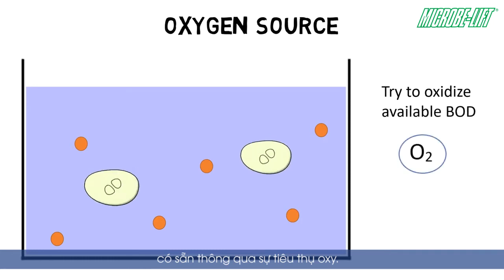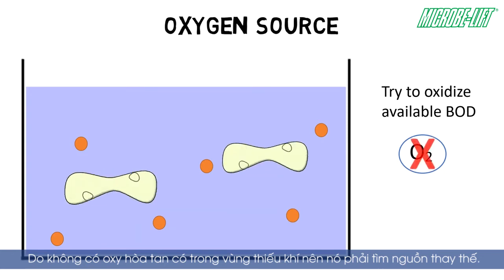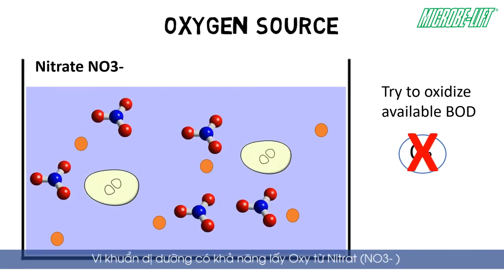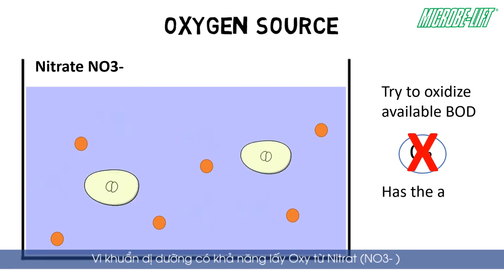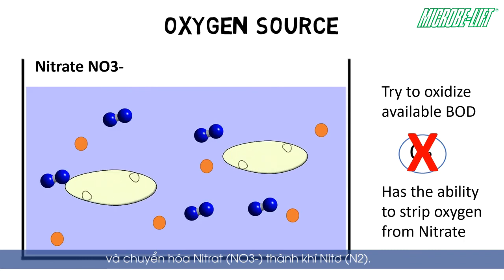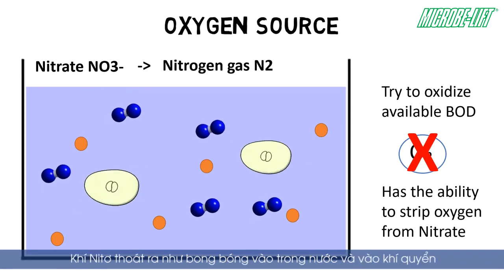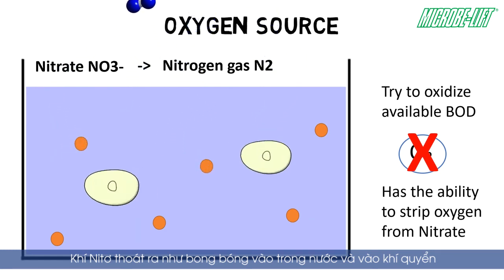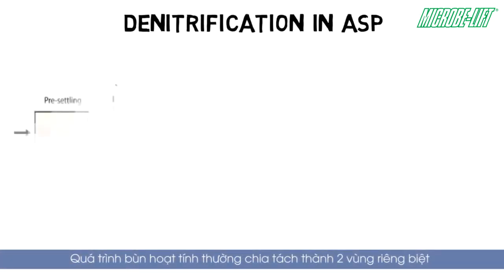The heterotrophic bacteria then try to oxidize the available BOD under the consumption of oxygen. However, as no dissolved oxygen is present in an anoxic basin, they look for alternative sources. Heterotrophic bacteria have the ability to strip the oxygen from nitrate (NO3-) and convert it to nitrogen gas (N2). The nitrogen gas then floats as bubbles to the water surface and into the atmosphere.